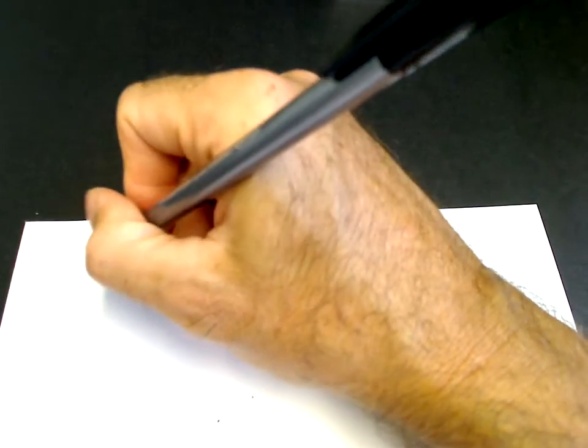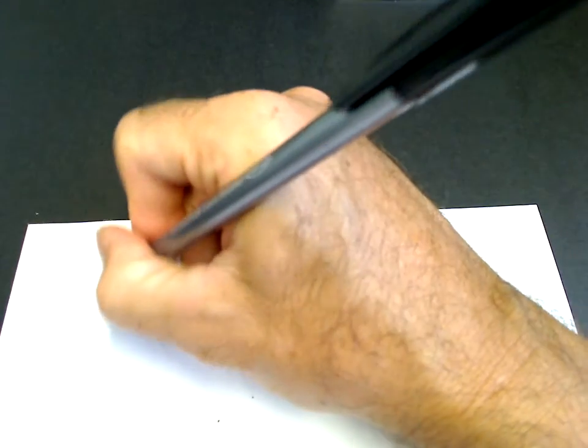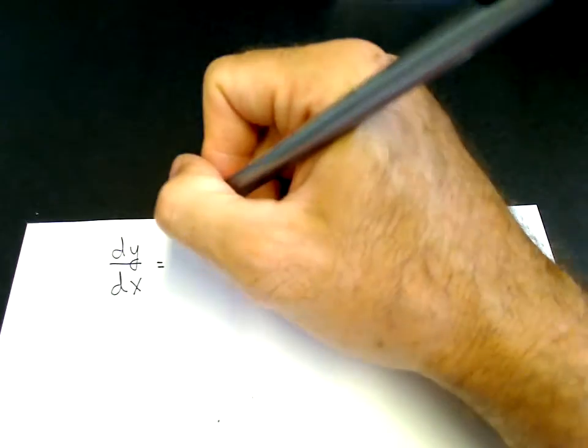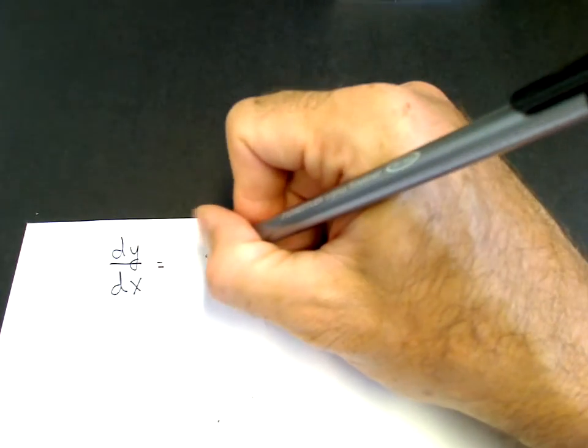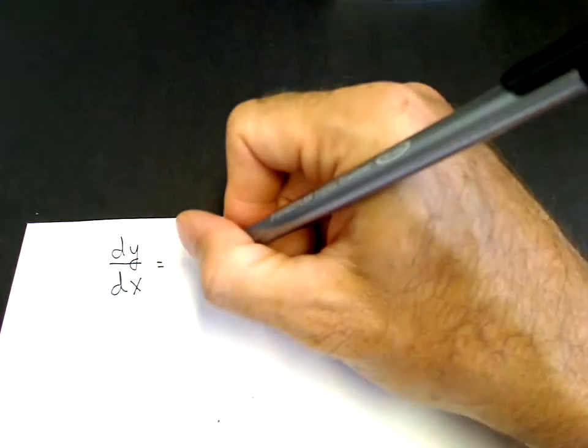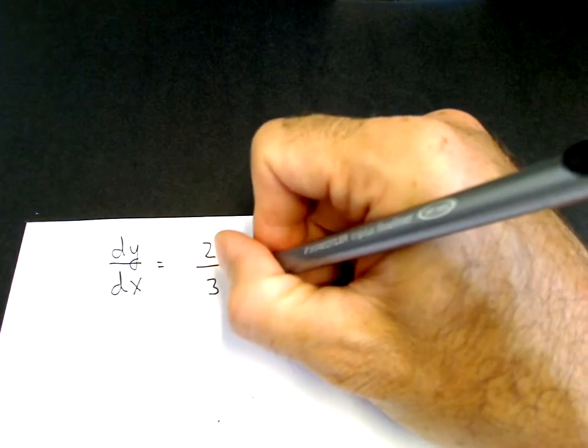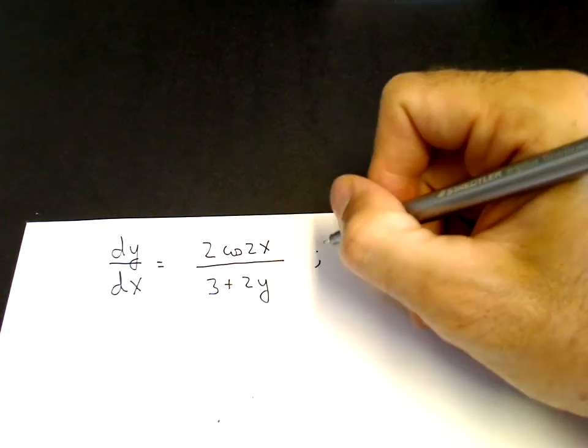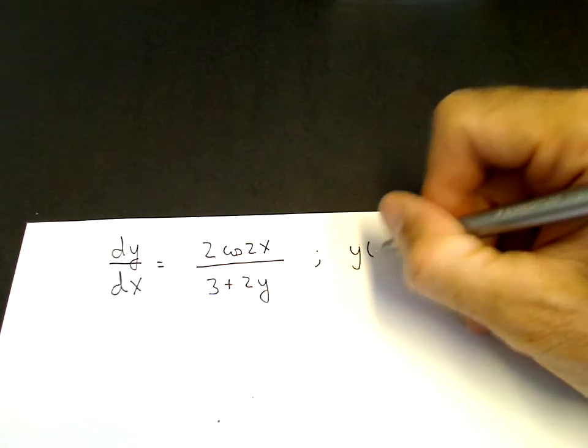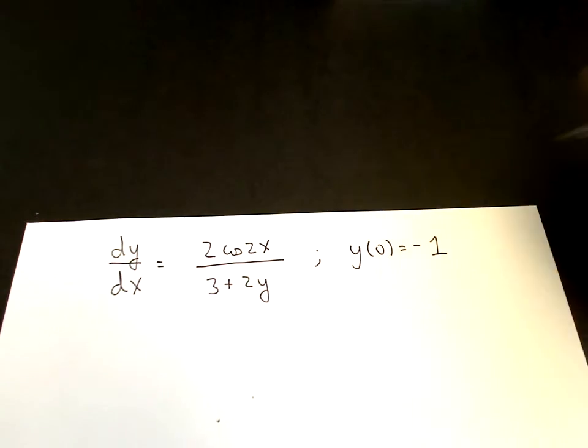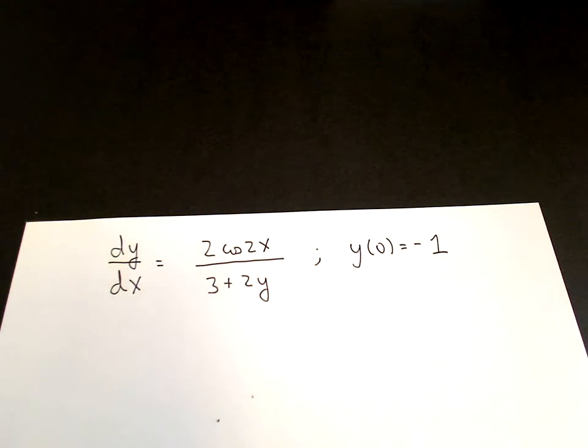The way to see how it works is to do a quick example. So we have, as an example, dy dx equals some relatively complicated right-hand side, 2cos2x divided by 3 plus 2y with an initial condition y of 0 equals minus 1. So suppose that for some reason, some physical problem gives you a differential equation that looks like this.